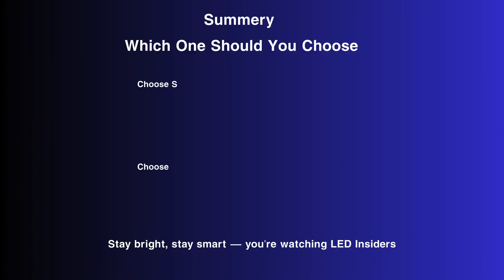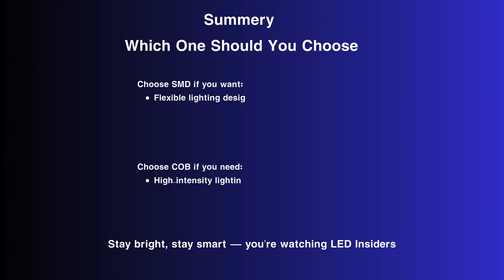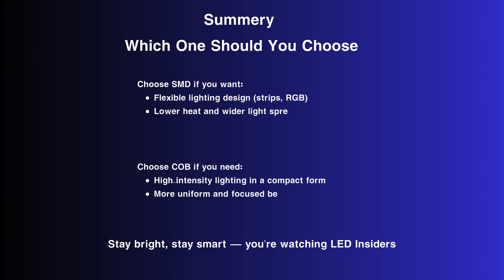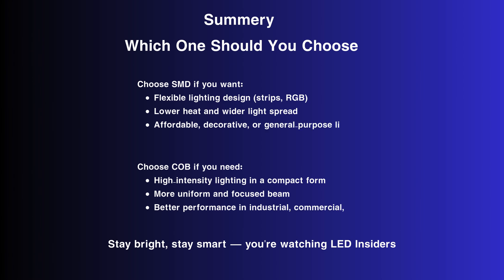Which one should you choose? Choose SMD if you want flexible lighting, design strips, RGB, lower heat, and wider light spread — or affordable decorative and general-purpose lighting. Choose COB if you need high-intensity lighting in a compact form, a more uniform and focused beam, or better performance in industrial, commercial, or task lighting. Stay bright. Stay smart. You're watching LED Insiders.